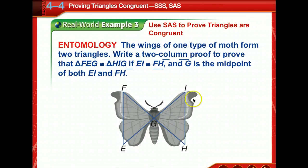So here we have, is that a moth? Yes. The wings of one type of moth form two triangles. Write a two-column proof to prove that triangle FEG is congruent to triangle HIG. If EI is congruent to FG, okay, and G is the midpoint of both EI and FH. You might want to draw this figure because it's going to disappear when we go to the next screen. It'll make it easier to see what we're doing.